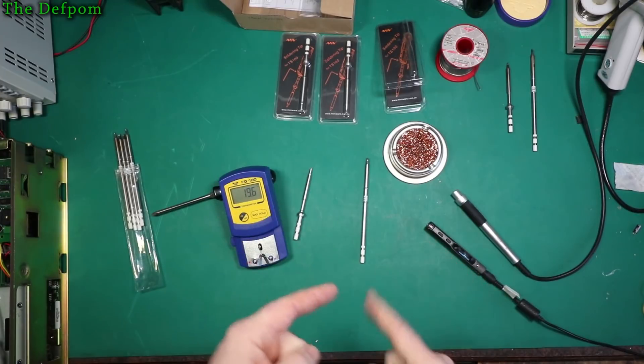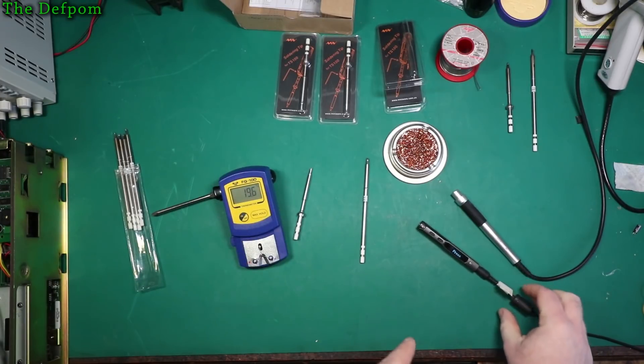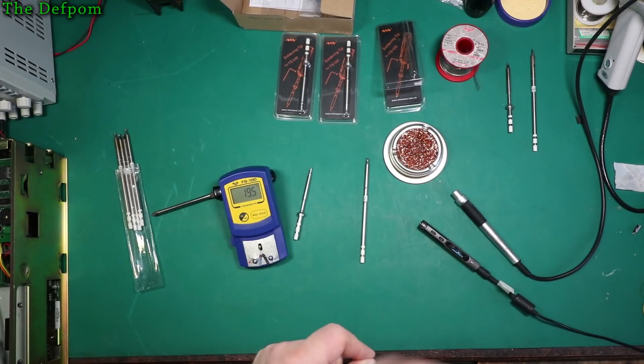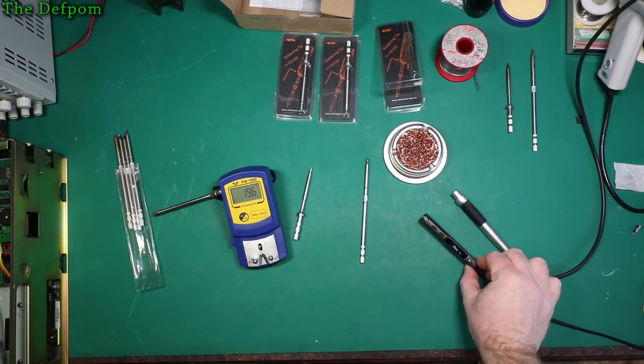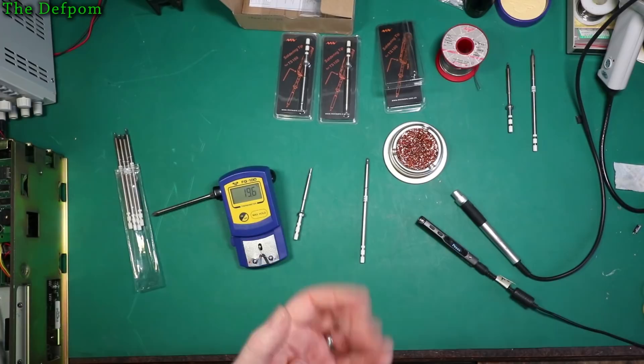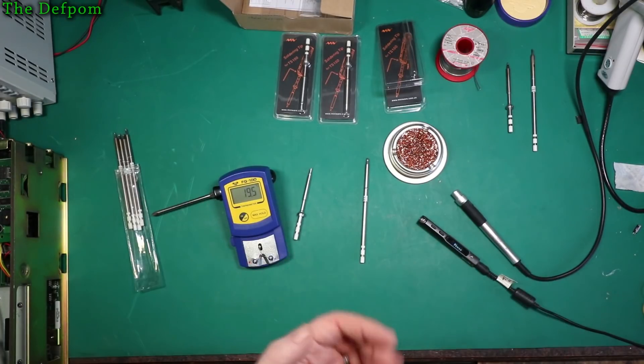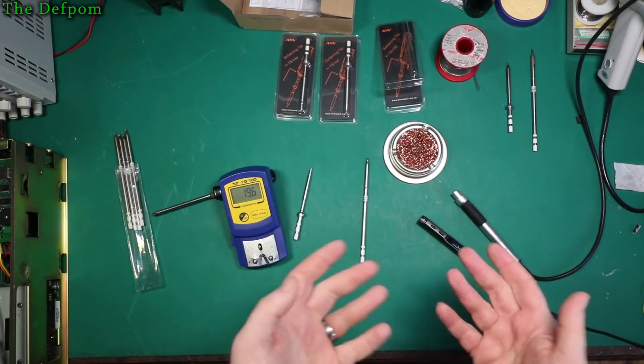One little difference I do have is that this iron is running from 16 volts, not 19 volts. I've got a 16 volt power supply on this thing because that just happens to be what I've got with the correct plug on it. Only runs at 16 volts, so it's going to be slightly lower powered.